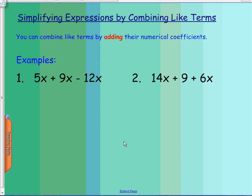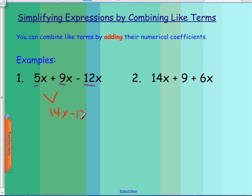You can combine like terms by adding their numerical coefficients. Remember, a coefficient is the number before the variable. In example one, all terms have x, so they are all like terms: 5x plus 9x minus 12x. First, 5x plus 9x equals 14x, and then 14x minus 12x equals 2x. So when combining like terms in number one, the answer is 2x.